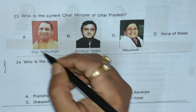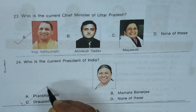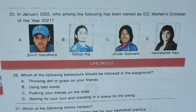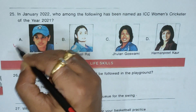Question 23: Who is the current Chief Minister of Uttar Pradesh? A) Yogi Adityanath, B) Akhilesh Yadav, C) Mayawati, D) None of these. Correct answer is A) Yogi Adityanath. Question 24: Who is the current President of India? A) Pratibha Patil, B) Mamata Banerjee, C) Draupadi Murmu, D) None of these. Correct answer is C) Draupadi Murmu. Question 25: In January 2022, who was named ICC Women's Cricketer of the Year 2021? Answer is A) Smriti Mandhana.